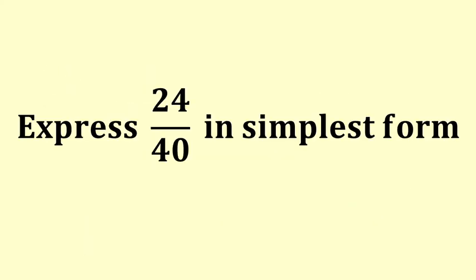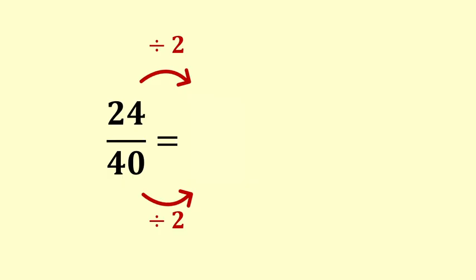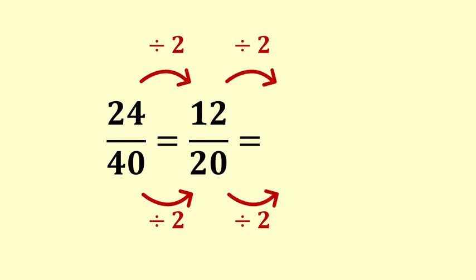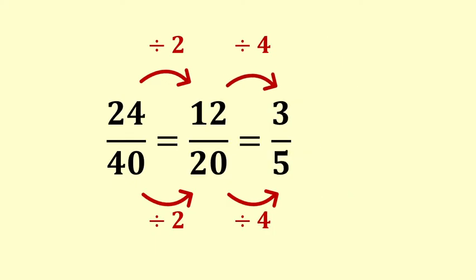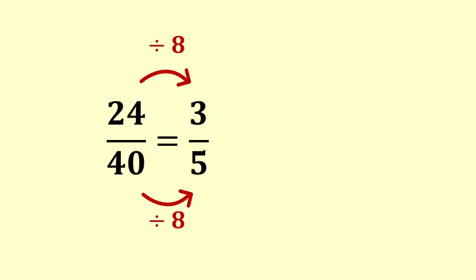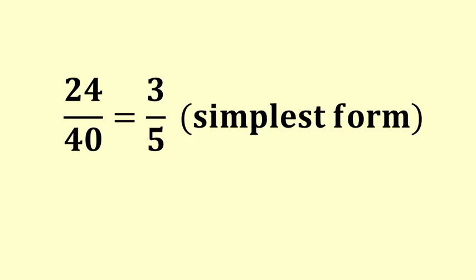Express twenty-four fortieths in simplest form. Twenty-four and forty are both even, so we will divide by two on the top and the bottom. That gives twelve twentieths. Still both even, so divide top and bottom by two. That gives six tenths. Still both even, so divide top and bottom by two. Three fifths. We know that nothing goes into three and five. We could have done this with fewer steps by dividing top and bottom by two, then four, or directly by eight. But we still get the same answer in the end.